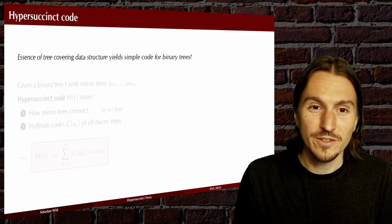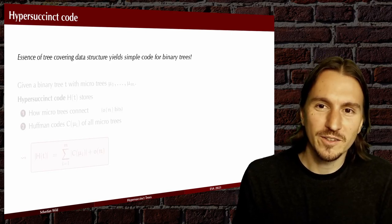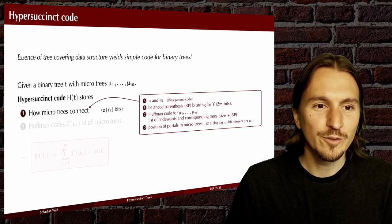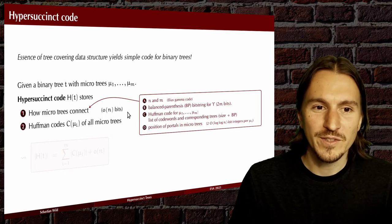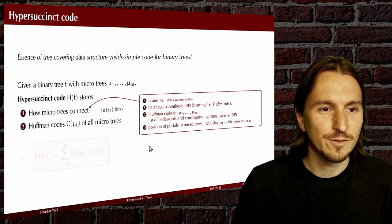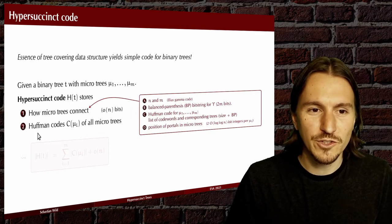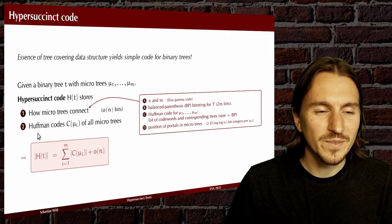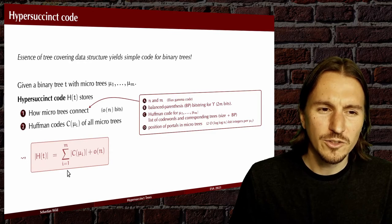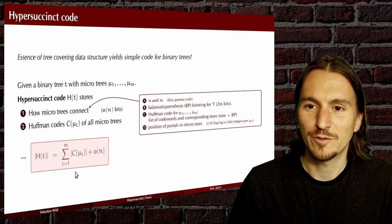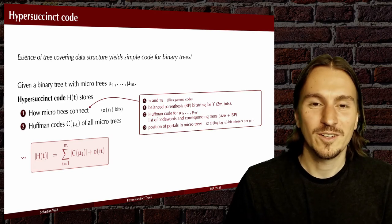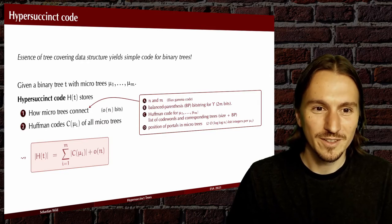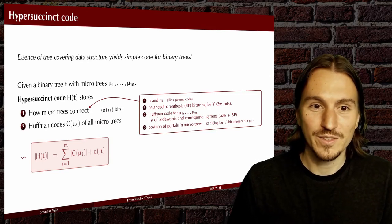If we're only interested in compressing trees, we can take the fairly complicated constructions in a tree covering data structure and simplify to this simple code. We store two things: how the micro trees connect — that only needs little-o of n bits — and the shapes of all the micro trees using a Huffman code. That gives us a code storing a tree using whatever it takes to spell out the micro tree shapes plus little-o of n. This code can be augmented into a data structure using exactly the same techniques as in tree covering, and all the contribution of our paper is to precisely analyze this code for many different distributions of tree shapes.